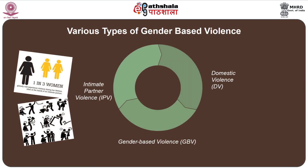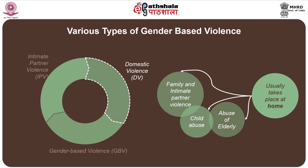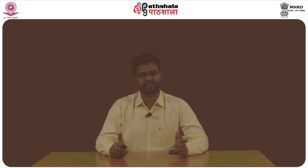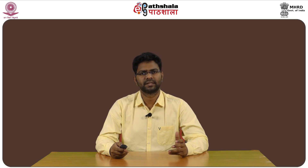Predominantly in the literature, three types of violence are termed gender-based violence. The first is domestic violence, and the second is intimate partner violence. Domestic violence is the violence committed by any family member towards either a male or female. Intimate partner violence is the violence committed by one spouse towards another spouse — the life partner.